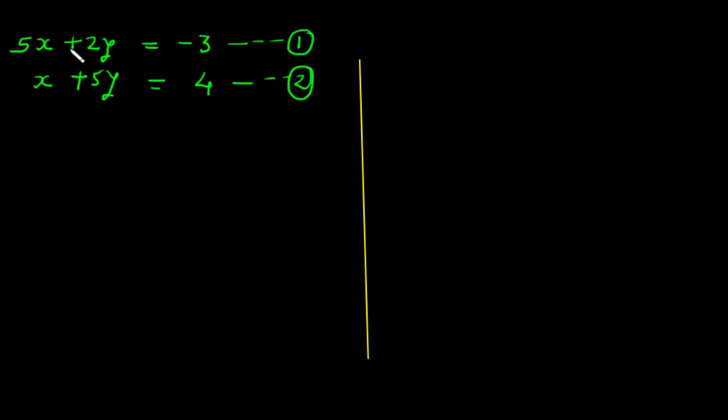Here we have two simultaneous equations: 5x plus 2y is equal to minus 3, and x plus 5y is equal to 4.